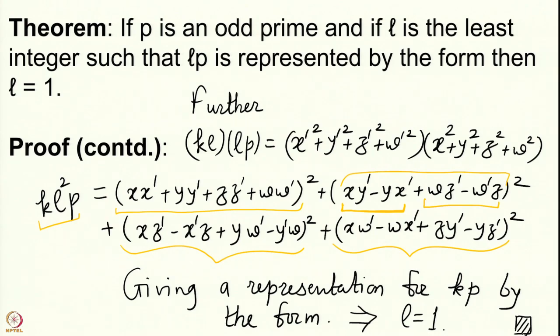What we have proved is that the form is multiplicative, 2 is represented by the form, and every odd prime is represented by the form. Getting Lagrange's theorem from this is very easy. We will see it first thing in our next lecture, but we have to stop here due to time constraints. Thank you very much.